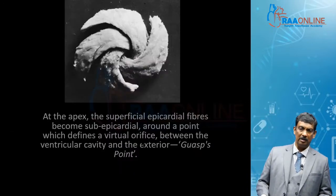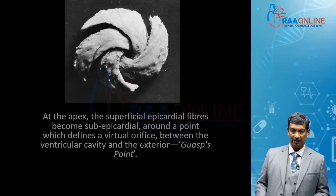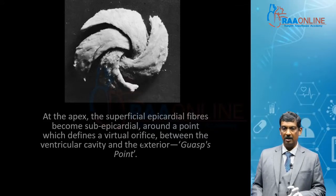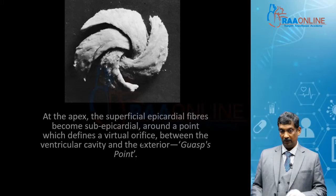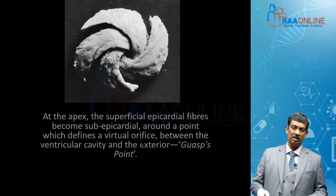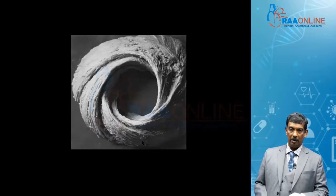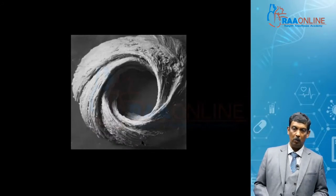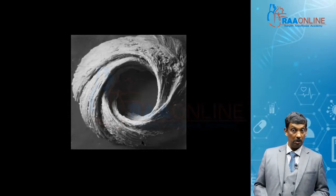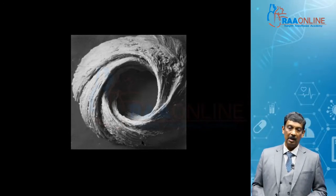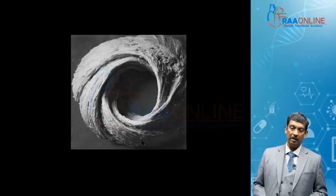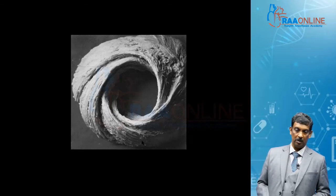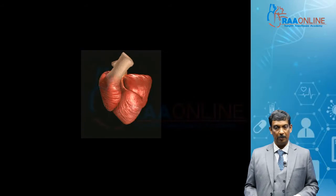At the apex, the superficial epicardial fibers become subepicardial around a point. This defines a virtual orifice called Guasp's point. This is the same point dissected out a little more. It is through this that one would enter when you do a closed mitral valve procedure and perhaps an apical CABG. This is Guasp's point.